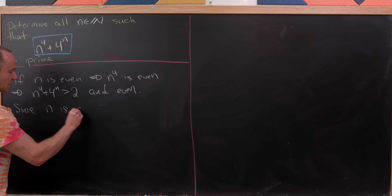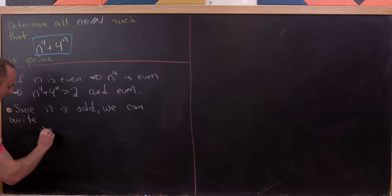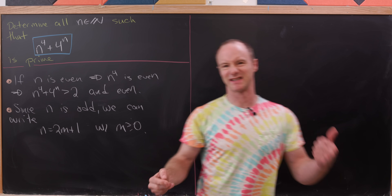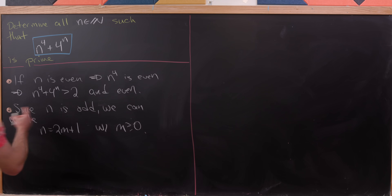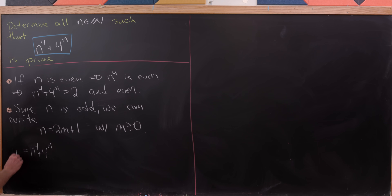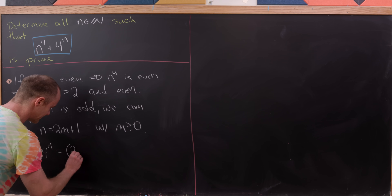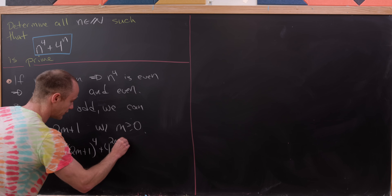Since n is odd, we can write n as 2m plus 1 where m is a non-negative integer — that's just the standard way of expressing an odd number. Now I'll take n to the fourth plus four to the n, assume that it's prime, and re-express this using the fact that n is 2m plus 1. So we have (2m+1) to the fourth plus 4 to the (2m+1).